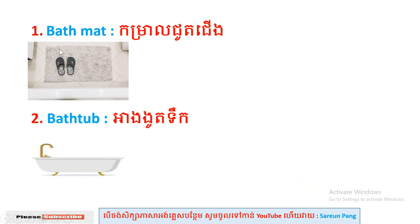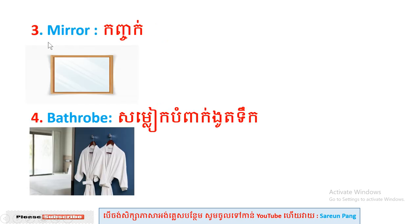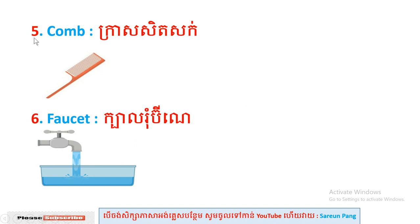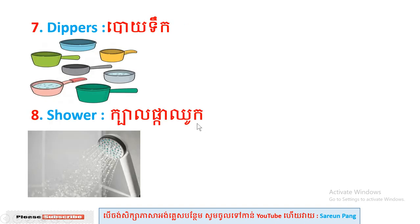Now let's start our lesson. Number one: bathmat. Number two: bath step. Number three: mirror. Number four: bath robe. Number five: comb. Number six: faucet.